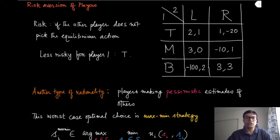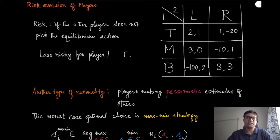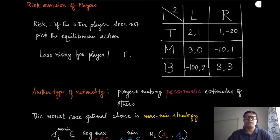Now we are going to address a different kind of situation where one player might be rational and intelligent but is not sure whether the other player is also rational and intelligent or not. So there is a certain amount of risk while playing the Nash equilibrium strategy when the other player might not be as intelligent as the current player.